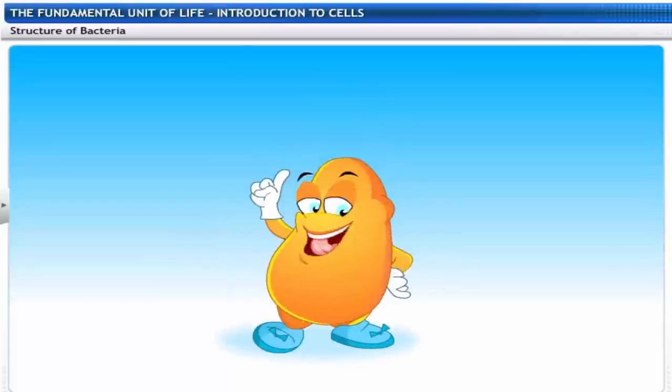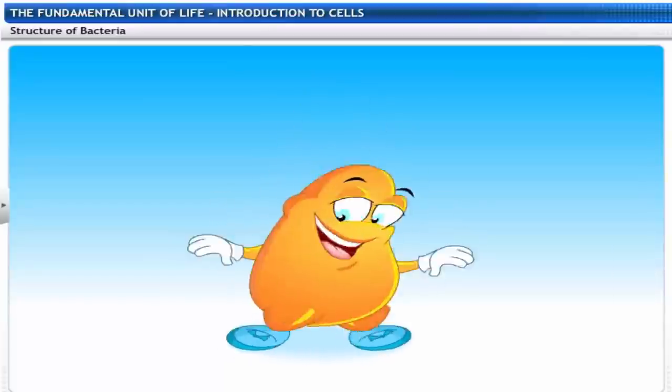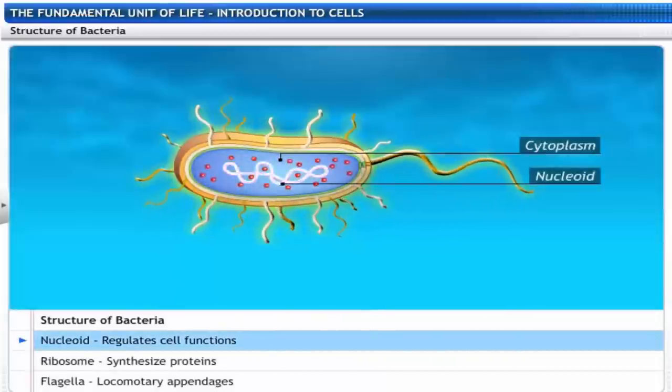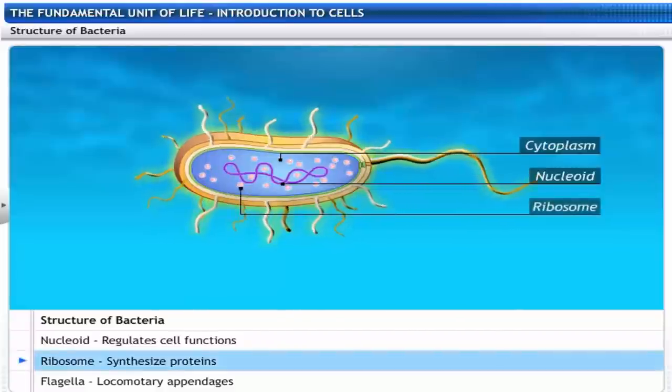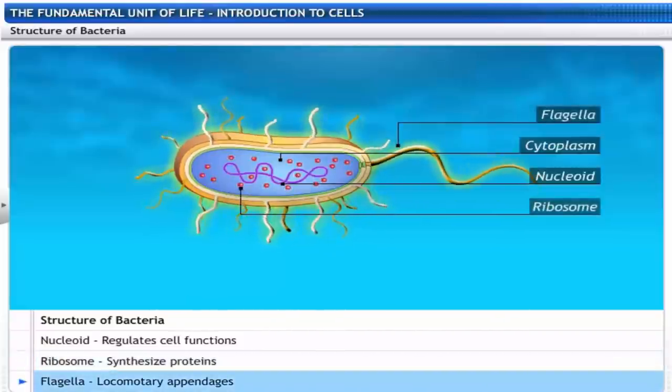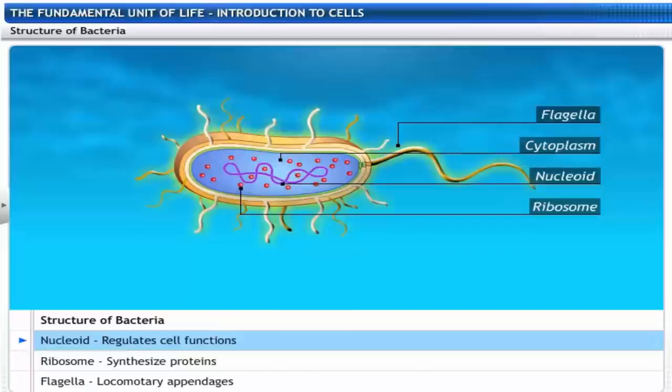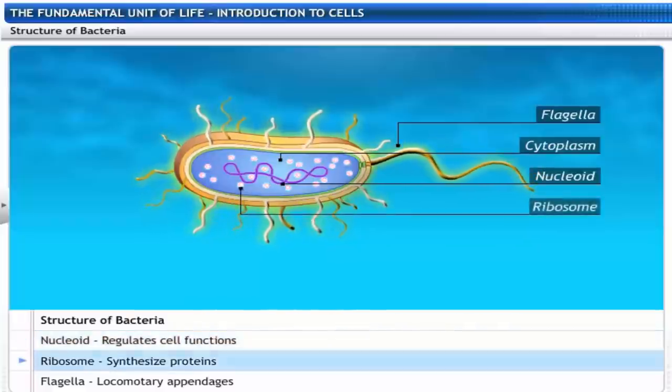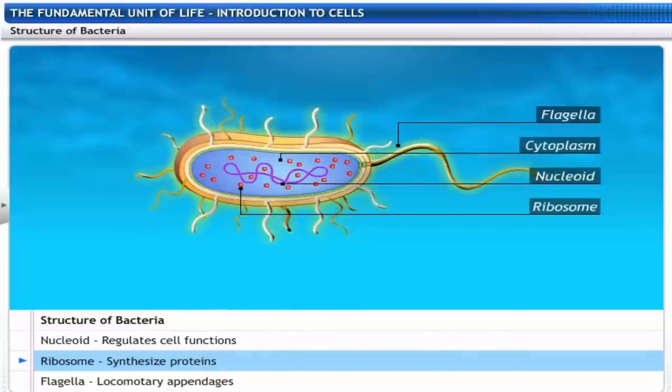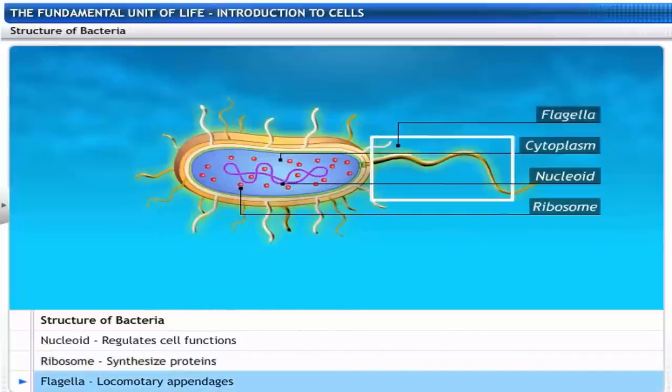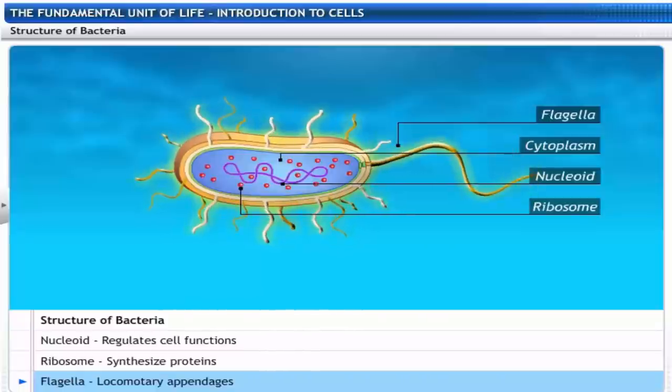Let's take a closer look at the cytoplasm. The cytoplasm contains the nucleoid, ribosome and flagella. The nucleoid is a single large circular DNA molecule confined to the central region. It regulates all the functions of the cell. Ribosome transfers the genetic message into proteins. Flagella are appendages responsible for motility.